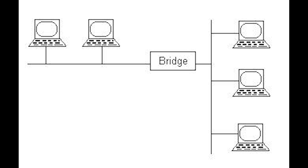The frame is flooded to all segments except the one from which it was received. By means of these flooded frames, a host on the destination network will respond and a forwarding database entry will be created. Both source and destination addresses are used in this process — source addresses are recorded as entries in the table, while destination addresses are looked up and matched to the proper segment to send the frame to.